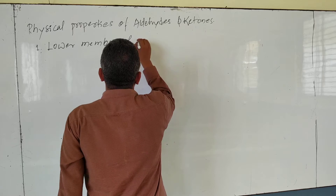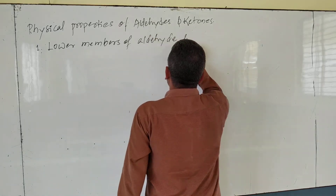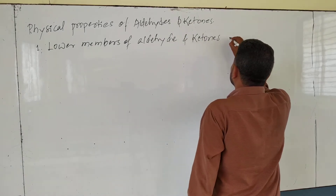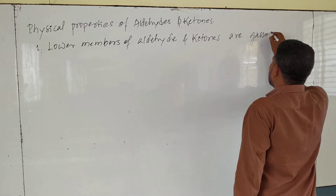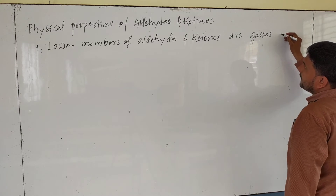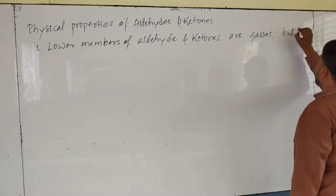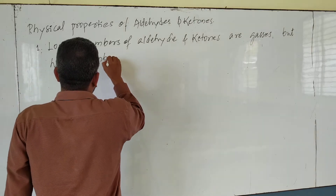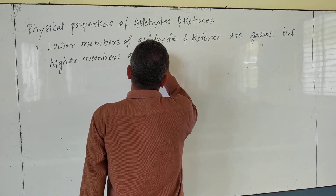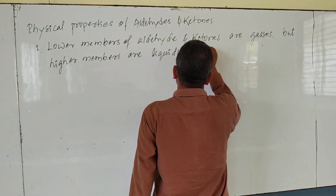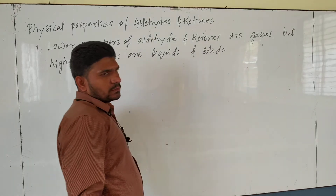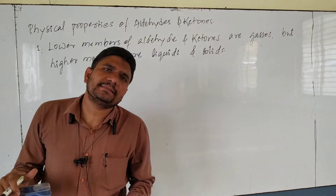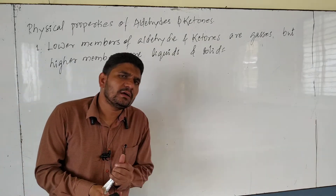The first physical property: lower members of aldehydes and ketones are gases, while higher members are liquids and solids. For example, formaldehyde is a gas — it is the first member of the aldehyde family, so lower members are gases. Higher members are liquids and solids.